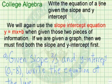I'm going to write the equation of a line given the slope and y-intercept. We will again use the slope-intercept equation y equals mx plus b when given those two pieces of information. If we're given a graph, then we must first find both the slope and the y-intercept.